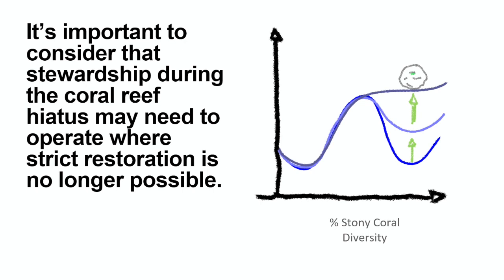The present, and certainly the future in many places, looks more like this in this simple diagram. What is the goal of restoration when the resilient state isn't currently viable and won't be viable for 10, 20, 30, or 100 years?